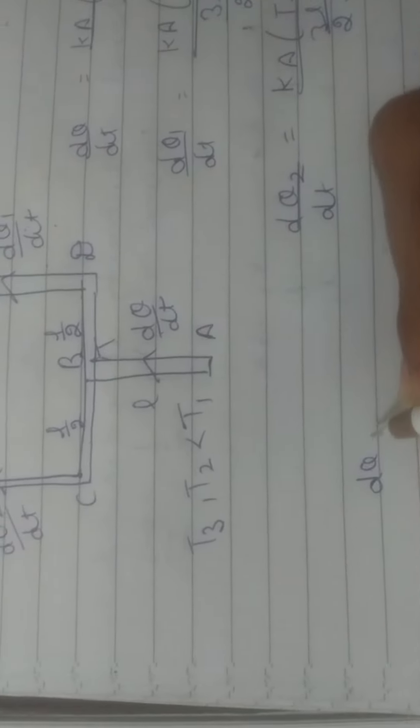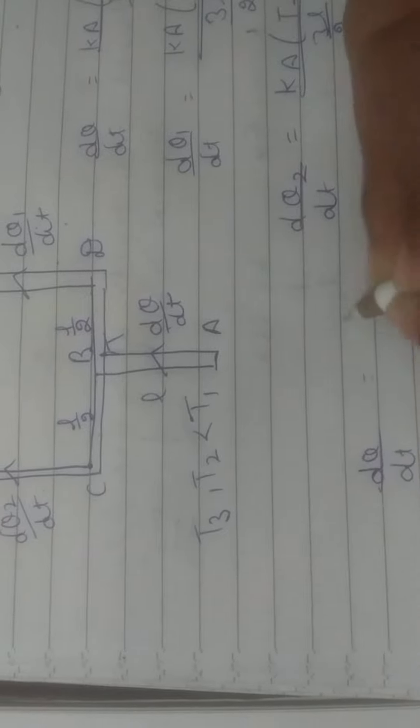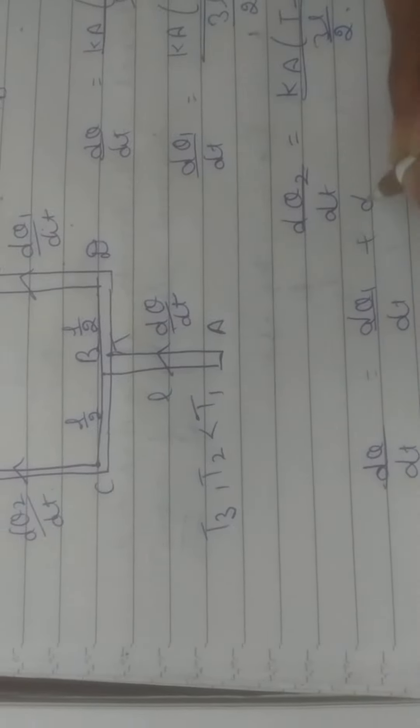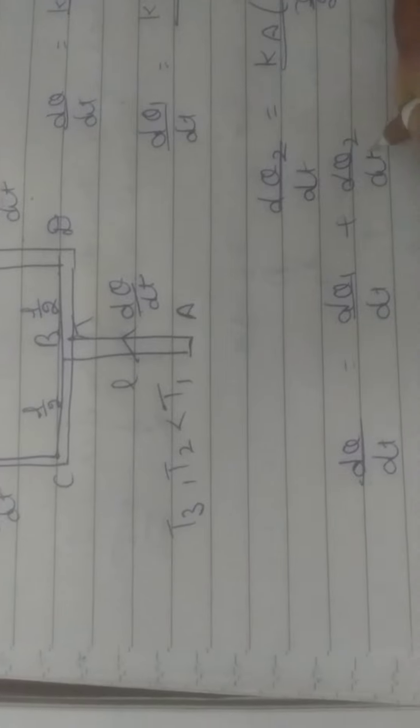So in this case, DQ by DT equals DQ1 by DT plus DQ2 by DT.